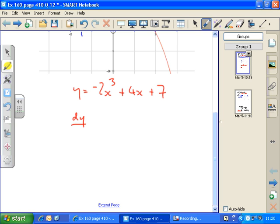So dy by dx equals minus 2 times 3 is minus 6, take one off the power, x squared, plus 4x disappears so just 4, and the constant disappears. So there's my differential function.